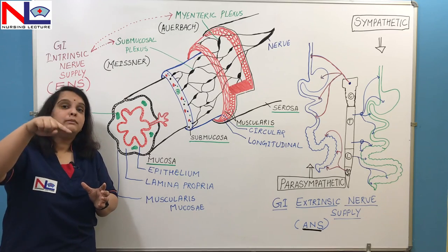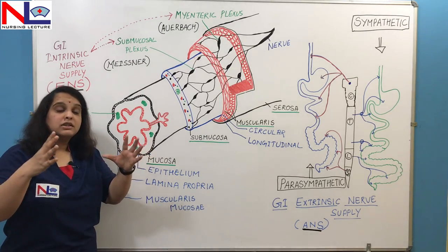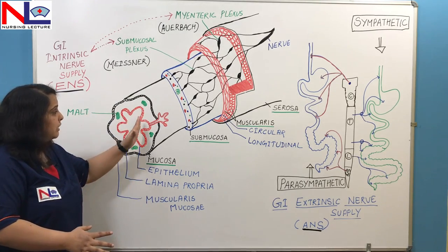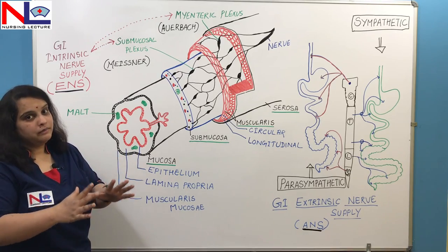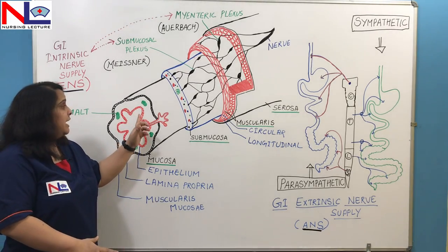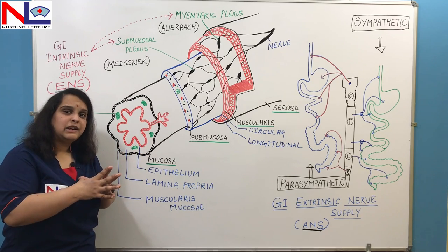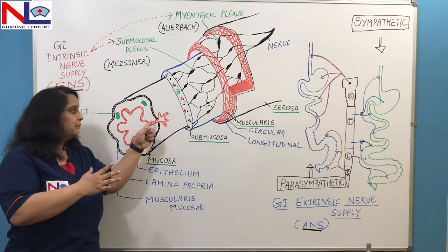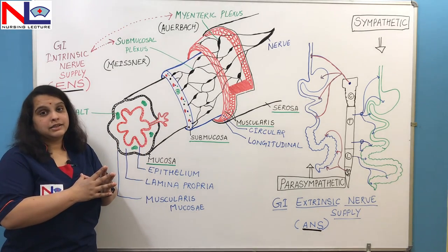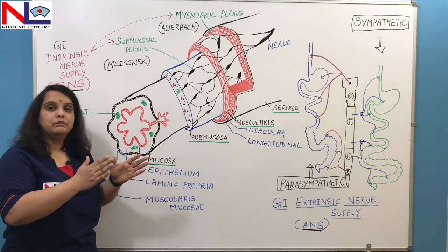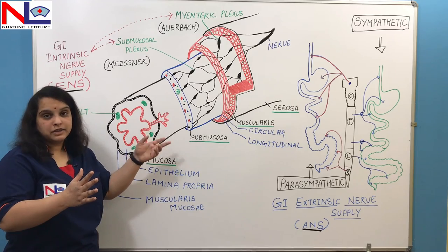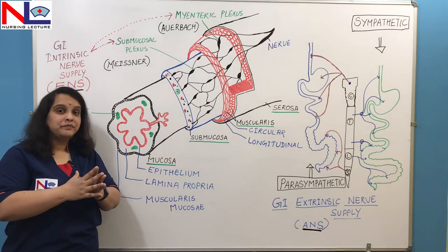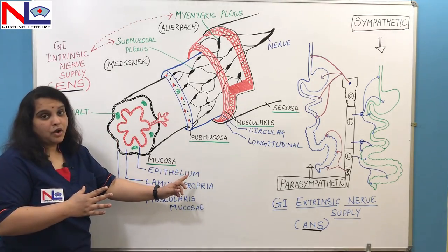Simple columnar means a single layer of column-like cells, because in those regions the function is digestion and absorption. It completely depends on the function the organ is playing. The cells are usually tightly packed because they prevent any leakage. Along with that, there are exocrine glands situated in between these cells which continuously release their secretions directly into the lumen.